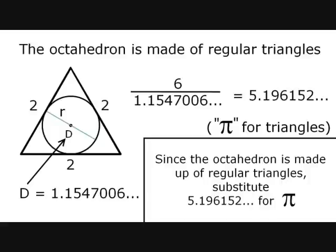What we're using is the inscribed sphere's diameter. If you take any regular triangle and divide its perimeter by the diameter of an inscribed sphere, you will always get the same answer, 5.196152, etc. This is essentially pi for triangles.